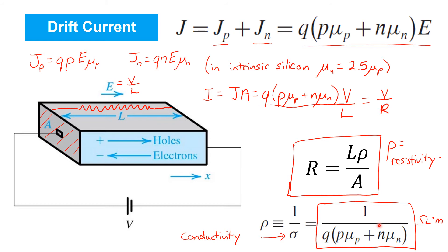A key intuition is that resistivity is inversely proportional to the carrier concentrations of both holes and electrons. So when the carrier concentrations become high, the resistivity becomes low and the material behaves like a conductor. When the carrier concentrations are low, the resistivity becomes high and the material behaves like an insulator — hence it's a semiconductor. Finally, it should be noted that the carrier mobilities μp and μn have a strong temperature dependence, and therefore the resistivity of the semiconductor material also has a strong temperature dependence.